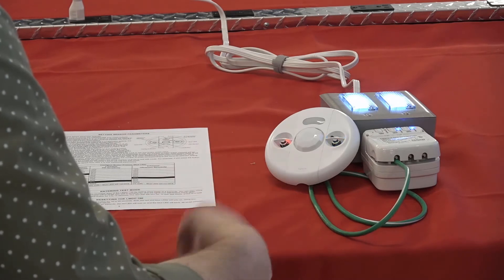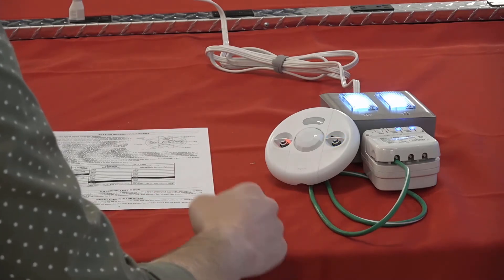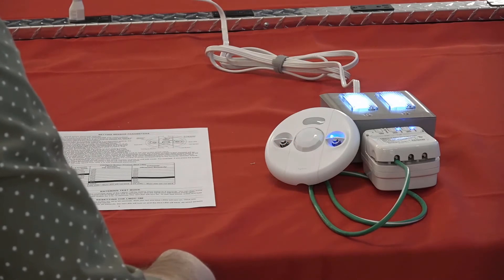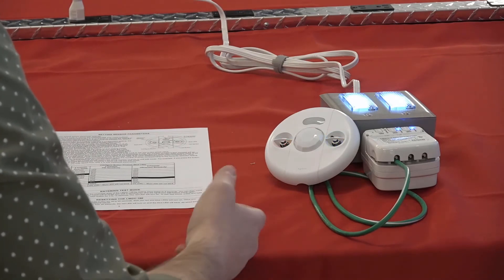Firstly, in order to identify if you have a new or previous version sensor, look for the color matched lenses on the device. Both the PIR and the LMCT lenses on the new version are color matched to the housing.